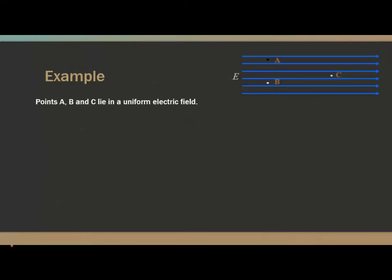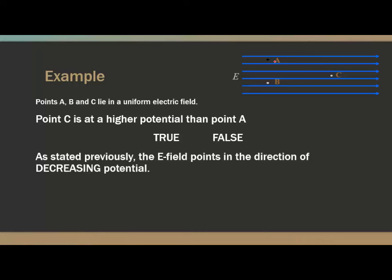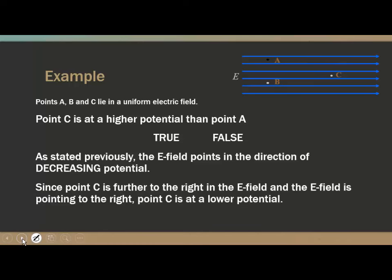Same configuration, different question: is point C at a higher potential than point A — true or false? Well, C is further downstream — further in the direction of decreasing potential. So point C has a lower potential than point A. That's false.